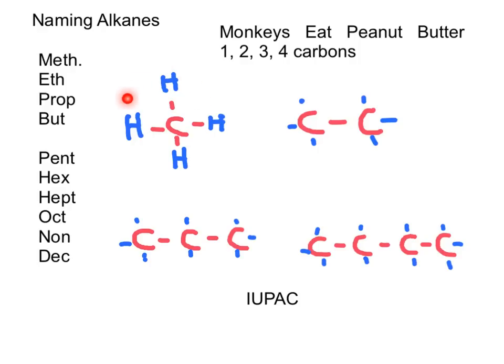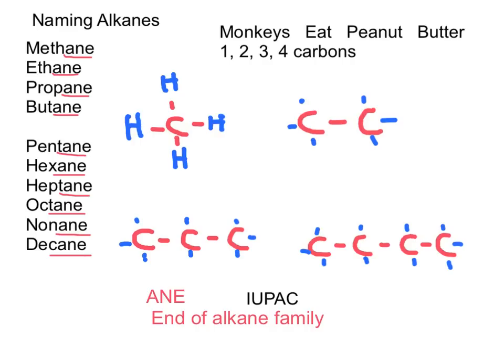The simplest alkane with one carbon is methane. When we have two carbons, we increase the number of hydrogens. We always need to remember that carbons need to have an octet. We go from methane to ethane to propane to butane. In all cases, we add the -ane ending to convert the prefix to a real name. When we use different functional groups, we still continue using the same prefixes.